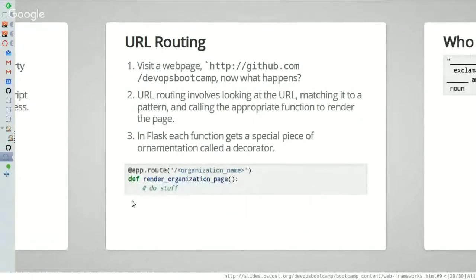URL routing is one of the first main features that a web framework will give you. Think of this story: when you go to the website github.com/devopsbootcamp, what happens? Your computer sends a request to github.com saying 'I want to go to github.com/devopsbootcamp.' GitHub says, 'I don't have a static HTML file for that, but I do have this application built on a web framework that can generate that page for you.' So it takes 'devopsbootcamp,' looks it up, and says here's what the page should look like — or if it doesn't find it, it sends a 404 page.